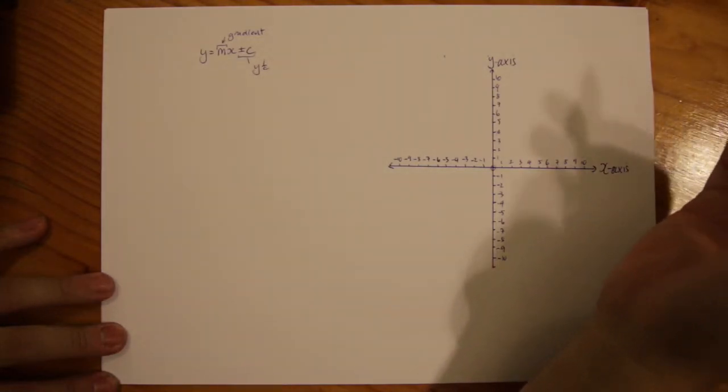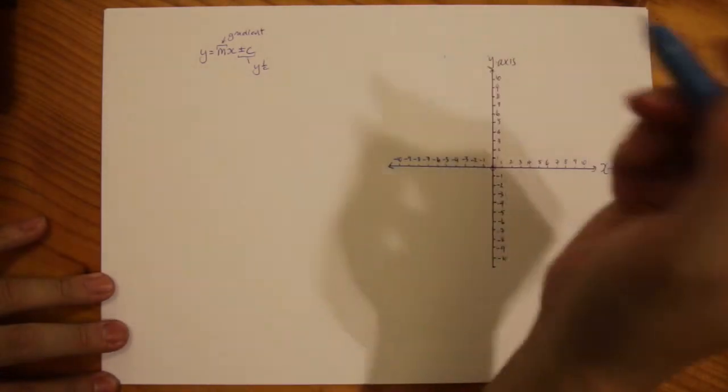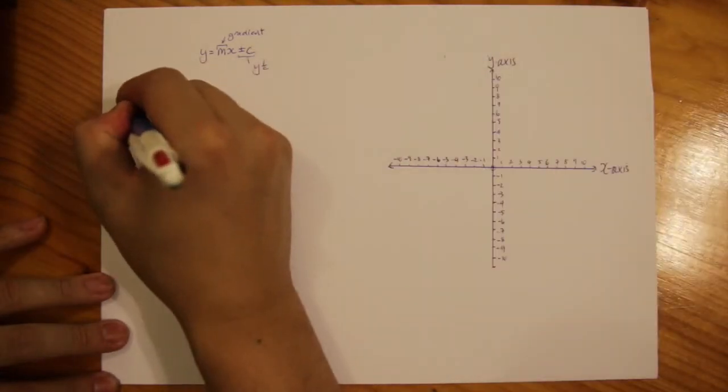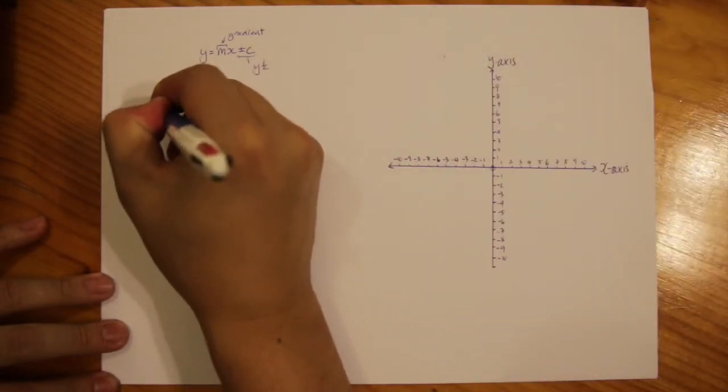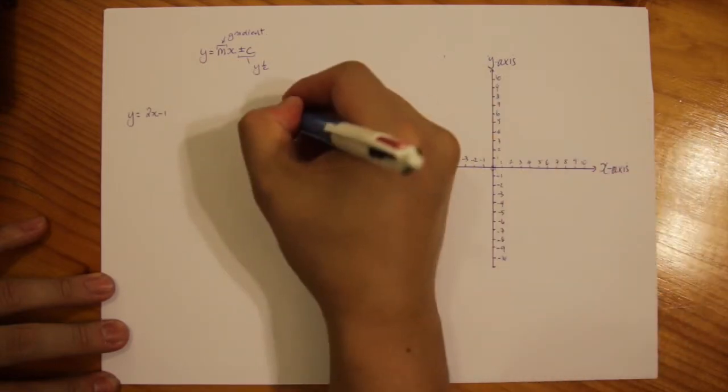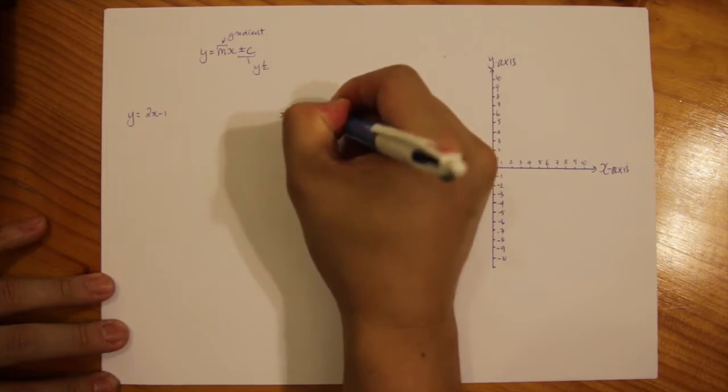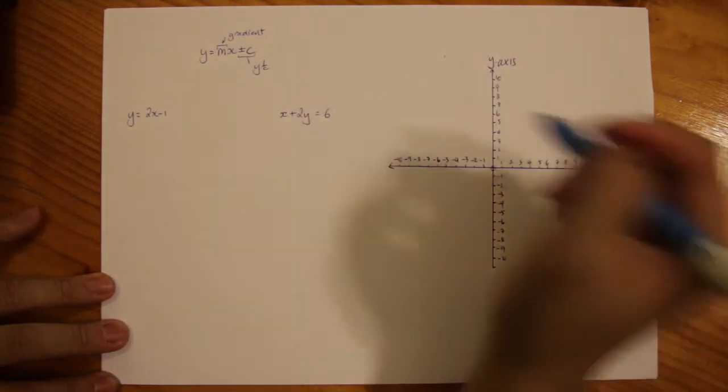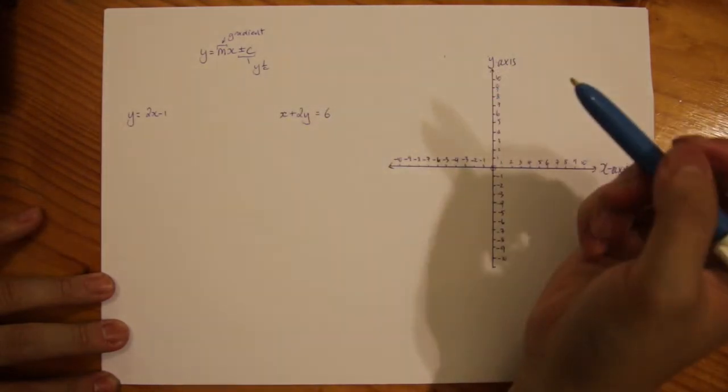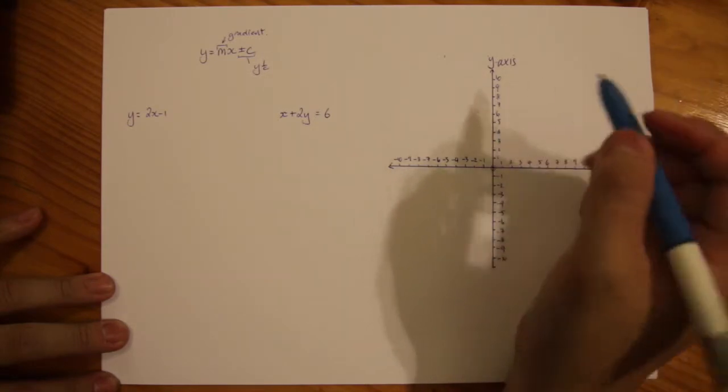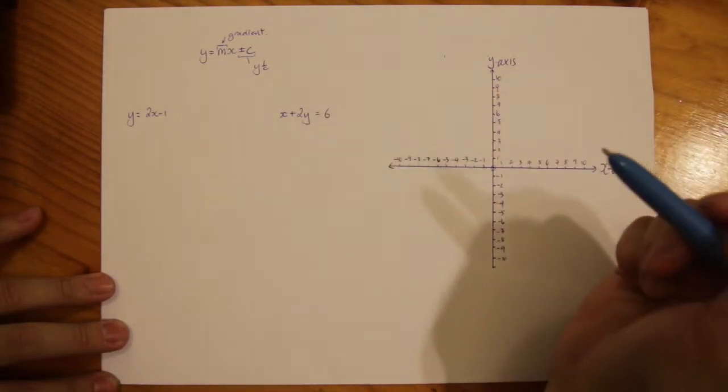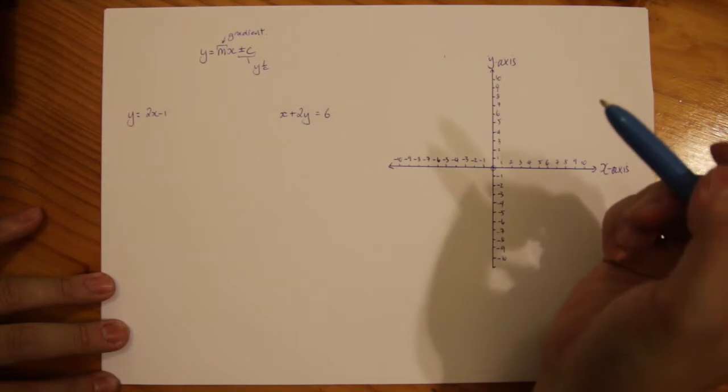So I'm going to have these two examples: y equals 2x minus 1 and my second example is going to be x plus 2y equals 6. Just because I like to do things in reverse, I'm going to start with that one before moving to that one there.